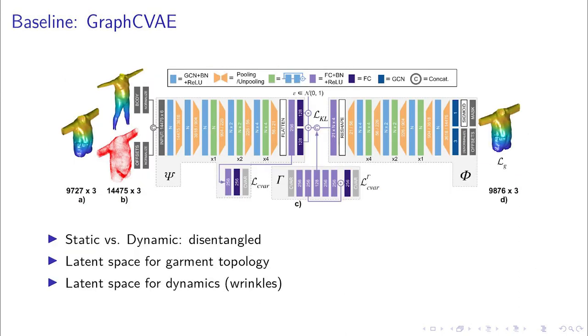Our baseline architecture consists of a graph conditional variational autoencoder. In a first stage, we train with rest garments only. This allows learning a latent space for static information, as garment type, shape and tightness.